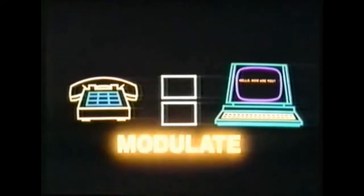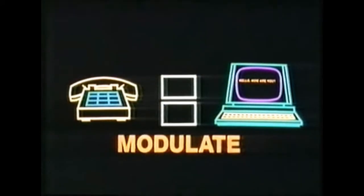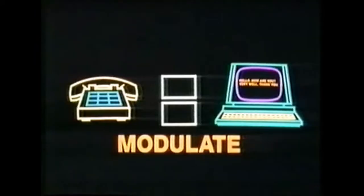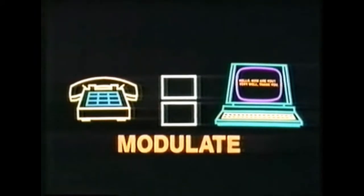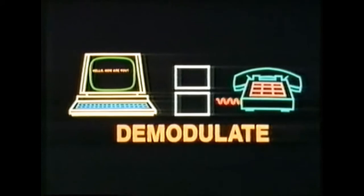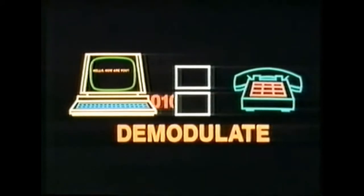To make it two-way communication, computer B needs a second black box to modulate its owner's message to you from computer talk to telephone talk. And computer A needs a second black box to demodulate that message from telephone talk back into computer talk.